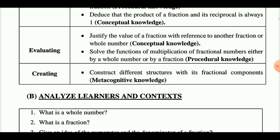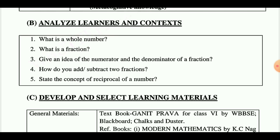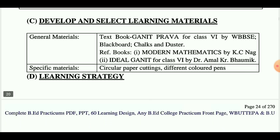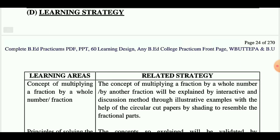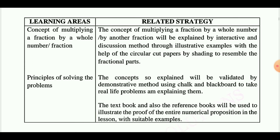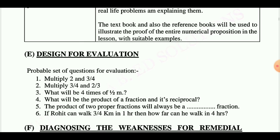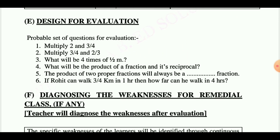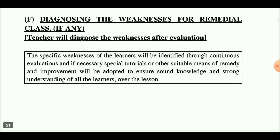Analyzing, evaluating, creating. Next point is analyze learner and context. Next point is develop and select learning materials, therefore learning strategy divided into two parts: learning areas and related strategy. Learning areas include concept of multiplying a fraction by a whole number and principle of solving problems. Design for evaluation includes six questions, for example multiply two and three by four. Finally, diagnosing the weakness for remedial class if any.